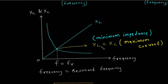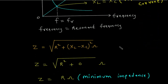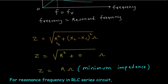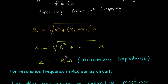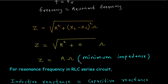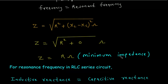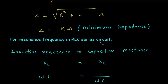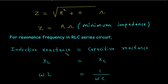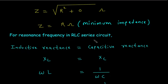At the resonant frequency, XL and Xc cancel each other. Therefore, impedance Z = √(R² + (XL − Xc)²) reduces to Z = √(R²) = R. This is the minimum impedance. The condition for resonance in an RLC series circuit is that inductive reactance equals capacitive reactance, XL = Xc.